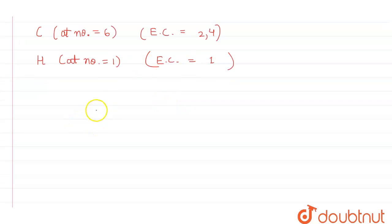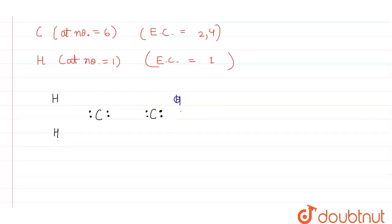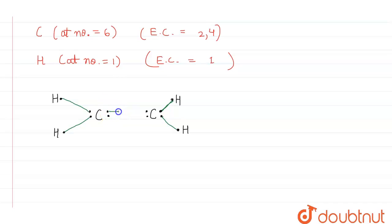Now let us discuss the formation of the double bond in C₂H₄. The two carbon atoms each have four valence electrons. There are four hydrogen atoms, each with one electron. Each hydrogen pairs its electron with one electron from carbon, forming the carbon-hydrogen bonds.